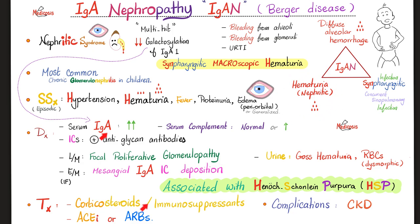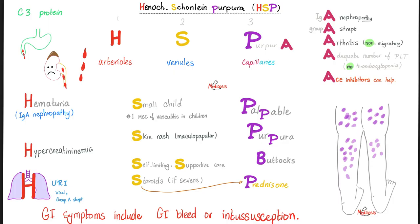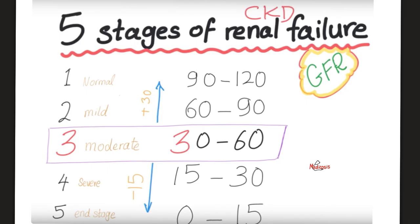How do we treat IgA nephropathy? When doctors are uncertain, they give steroids. ACE inhibitors or ARBs can help because of hypertension. ACE works like magic in three kidney diseases: number one, diabetic nephropathy; number two, scleroderma nephropathy; number three, Henoch-Schönlein purpura nephropathy, which is related to IgA nephropathy. Please refer to my video on Henoch-Schönlein purpura for the HSP mnemonic and the association with IgA nephropathy.